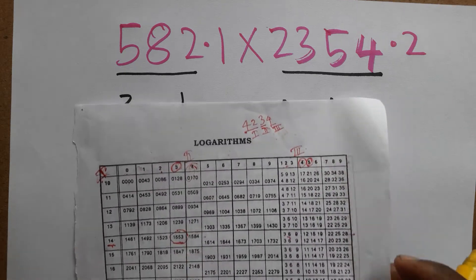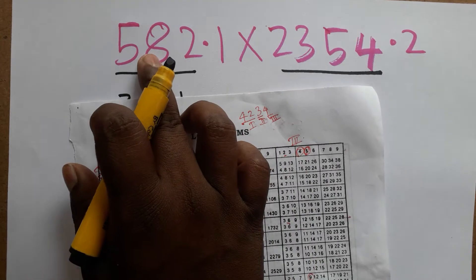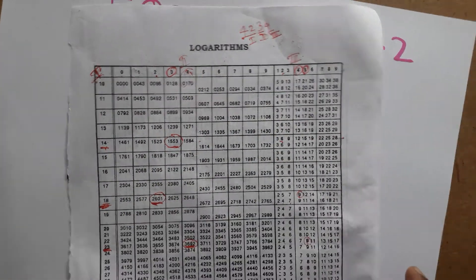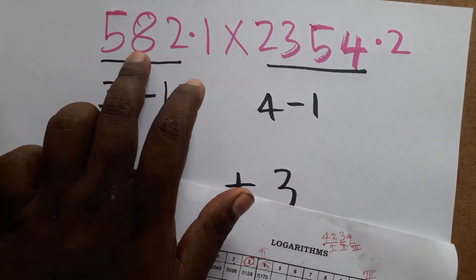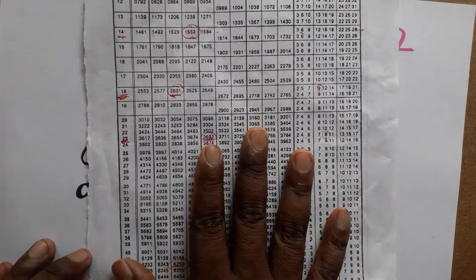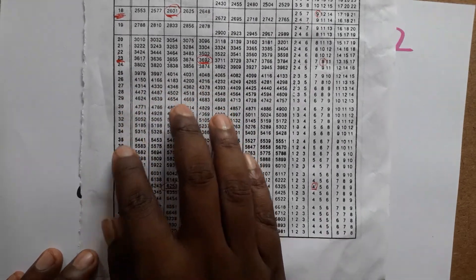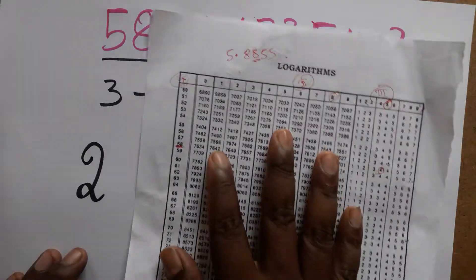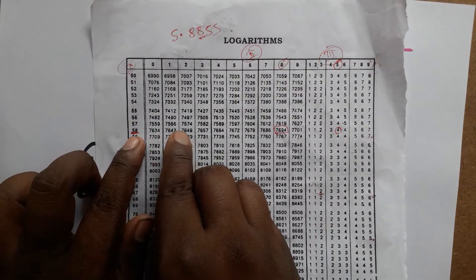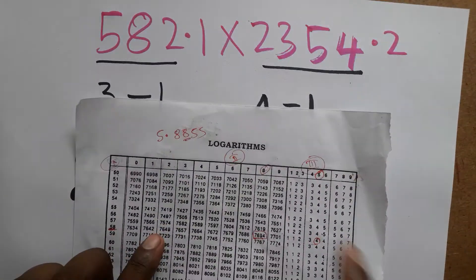Now we are going to find the log value of 5821. Because we moved the decimal, we look up 5.821 in the log table. I have the log table here. We look for 58 in the first column — 58 is here — and then column 2 for the digit 2. The meeting value is 7649.